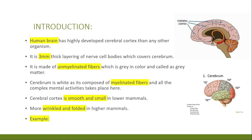The cerebral cortex is small and smooth in lower mammals. In higher mammals, it is more wrinkled and folded, which means its actual surface area is much bigger. For example, if we were to unfold it, it would be large, but when folded it becomes compact. In lower mammals such as rats, the cortex is smooth and small, whereas in higher mammals it is much larger and highly folded.